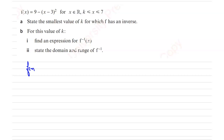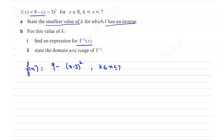We are given f(x) = 9 - (x - 3)² for x belonging to R, with k ≤ x ≤ 7. We need to find the smallest value of k for which f has an inverse, then find the inverse function, and also state the domain and range of f inverse.